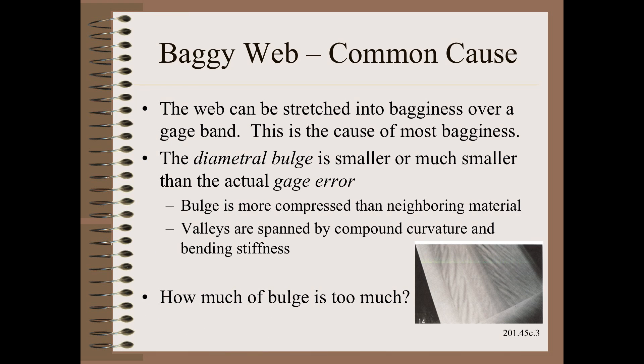If winding a web with gauge bands is the most common cause, how big of a bulge is too much? The answer is complicated by a couple of factors. The first is the yield point of the material, which may vary from less than 1% on some stiff materials to more than 10% on some rubbery materials. The second complication is that winding is a leveling process — it tends to beat down the high spots and fluff up the low spots. Thus, the wound roll diameter bulge will be smaller or much smaller than the gauge error that created it.